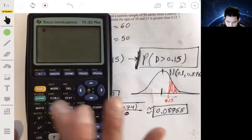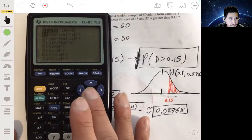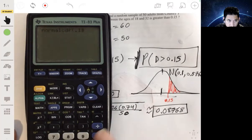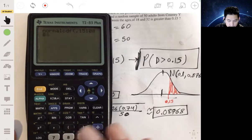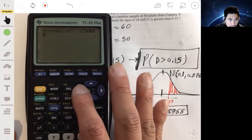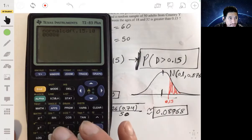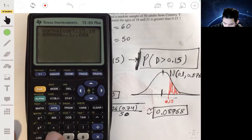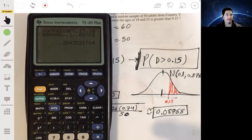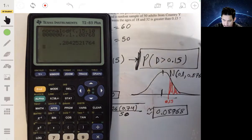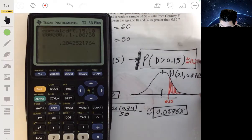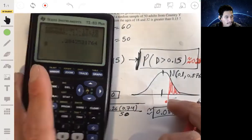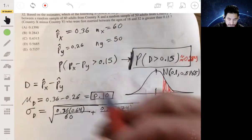So I can just now use technology. I'm using a calculator. Let me go to my distribution function. I'm going to go to normal CDF function. Lower bound would be 0.15. The upper bound would be like a billion. Don't forget the comma. And the mean 0.1. Followed by the standard deviation 0.08768. Bang. And we will get 0.28ish about, 0.284. And so our answer is undoubtedly B.